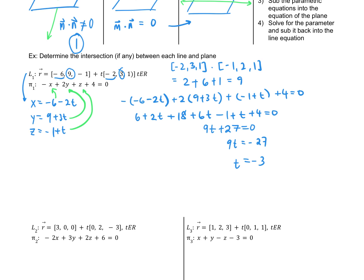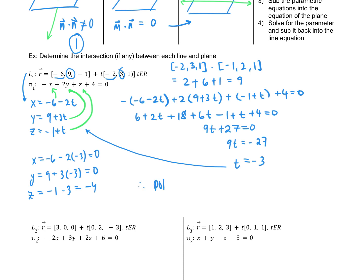Substituting t = -3 into the parametric equations: x = -6 - 2(-3) = -6 + 6 = 0; y = 9 + 3(-3) = 9 - 9 = 0; z = -1 + (-3) = -4. Therefore the point of intersection is (0, 0, -4). You can do a left-side/right-side check on the plane equation to verify the point lies on the plane.